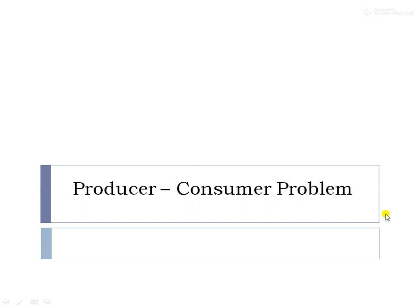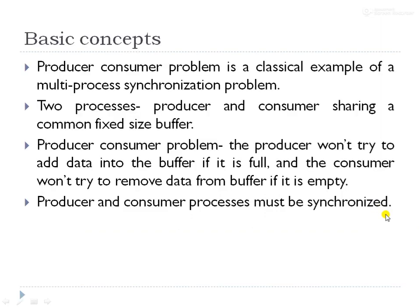Today we will see the producer-consumer problem. This is a classical example of a multi-process synchronization problem. In the producer-consumer problem, there are two processes — producer and consumer — which share a common fixed-size buffer. The producer produces each item and puts it in the buffer, and the consumer consumes each item from the buffer. If the buffer size is five, five items can be produced and consumed.